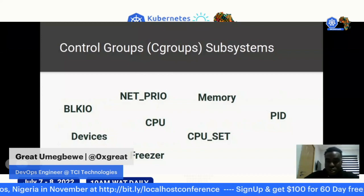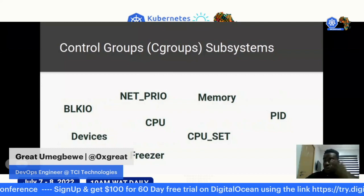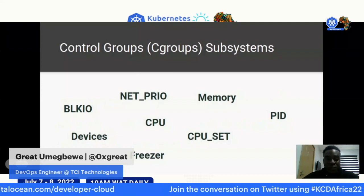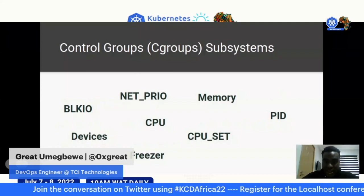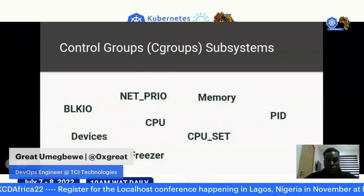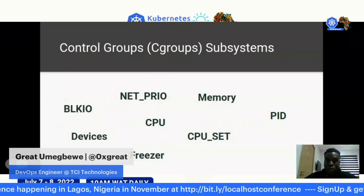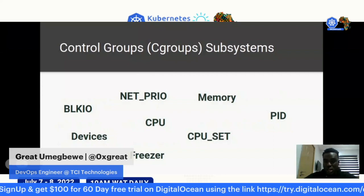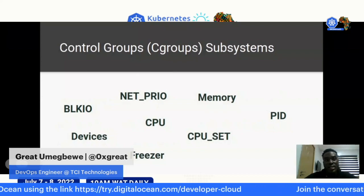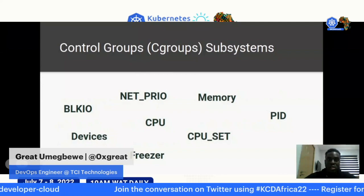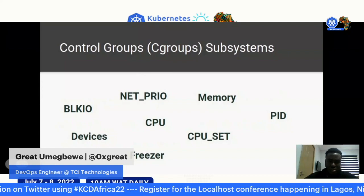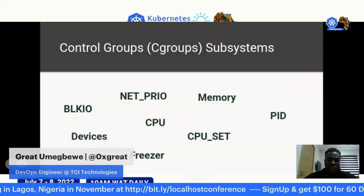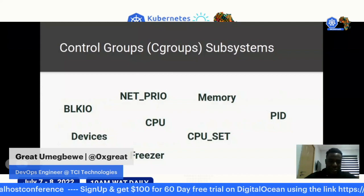The network namespace virtualizes the network stack. Upon creation, a network namespace contains only a loopback interface — I'll show an example of this in the demo. The user namespace provides privilege isolation and user ID segregation — UID and GID — giving you a security feature. It was added to the Linux kernel at version 3.8.